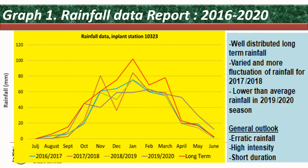Most interesting here, the 2017–2018 graph was very drastic in terms of its rainfall pattern — full of big zigzags, showing the variation of rainfall within a very short space of time. My interest in this graph is the 2019–2020 season, where rainfall was quite significantly low compared to the long-term average. Generally, the rainfall was erratic in nature, coming with high intensity of short duration.